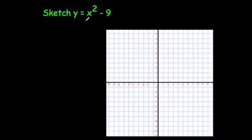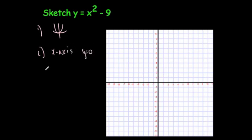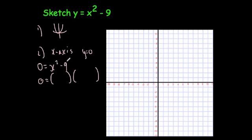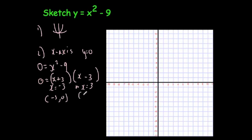This time we're going to sketch the graph y equals x squared minus 9. Again, it's an x squared graph so you know it's going to have a U-shaped parabola. To find where it crosses the x-axis, you let y equals 0, giving 0 equals x squared minus 9. When you factorize that, it's a difference of two squares — x squared and 9 are both perfect squares — so you get (x + 3)(x − 3). That means x equals minus 3 or x equals 3, giving coordinates (minus 3, 0) and (3, 0).